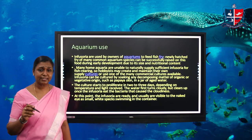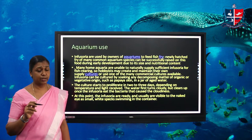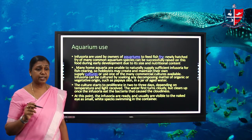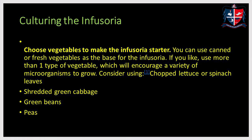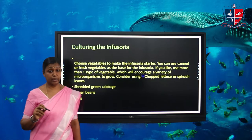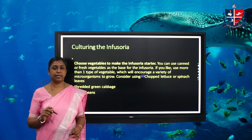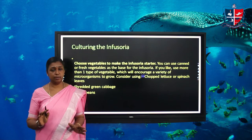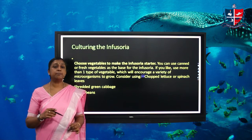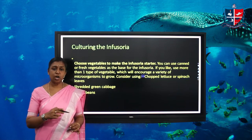The culture of infusoria is very easy and simple. Using a cabbage leaf, spinach leaf, banana leaf, or any vegetables, we can make infusoria. For culturing infusoria we need a clean one-liter glass bottle, water, and some leafy vegetables. The first step is to chop the leafy vegetable into small pieces.